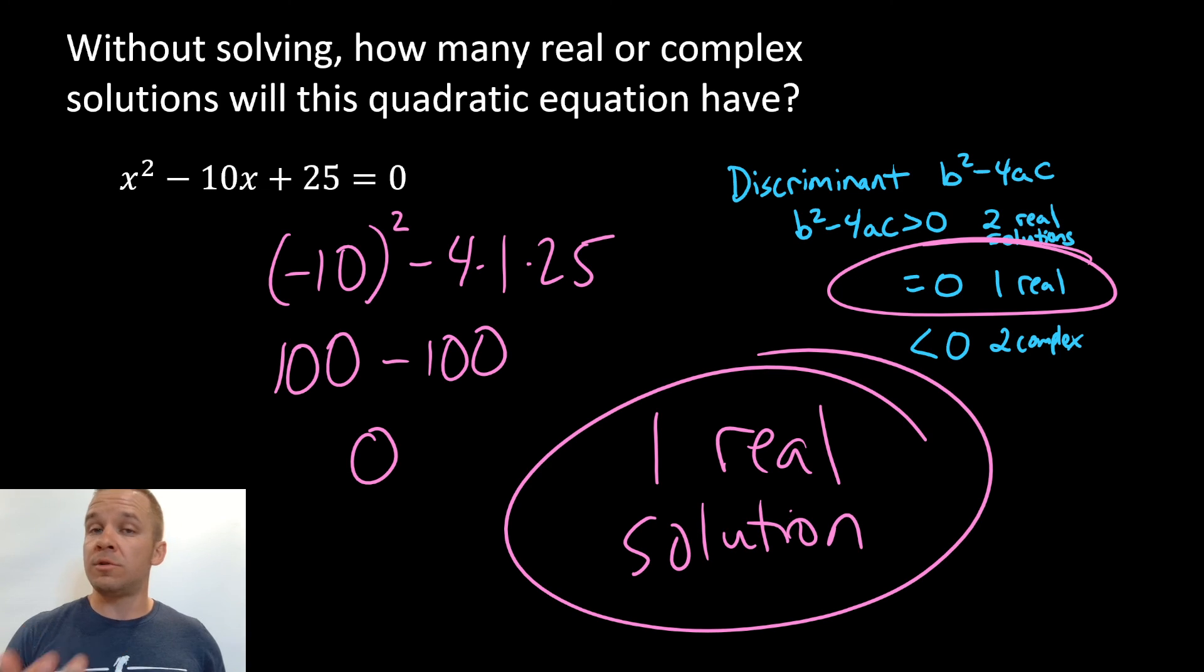Technically, what it has is a multiplicity of two. You'll see that when you're graphing, it bounces off the x-axis. But that's for another day. For now, we just want one real solution from this guy. That's it. Done.